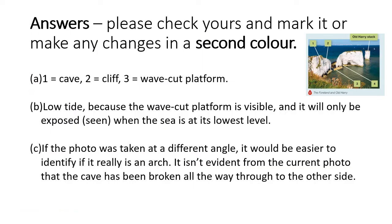OK, answers. Number one: we have a cave. Number two: a cliff. Number three: a wave cut platform. This is definitely low tide — you can see the wave cut platform. Hopefully what you can see is we're taking knowledge gained in previous lessons and applying it, which is great exam technique. And finally, how do we know it's not an arch and what could we do to make it clear? We would need to take the photo at a different angle — it'd be easier to identify an arch if we can see through the full arch. That one was just testing whether you really know what an arch is: it breaks all the way through.